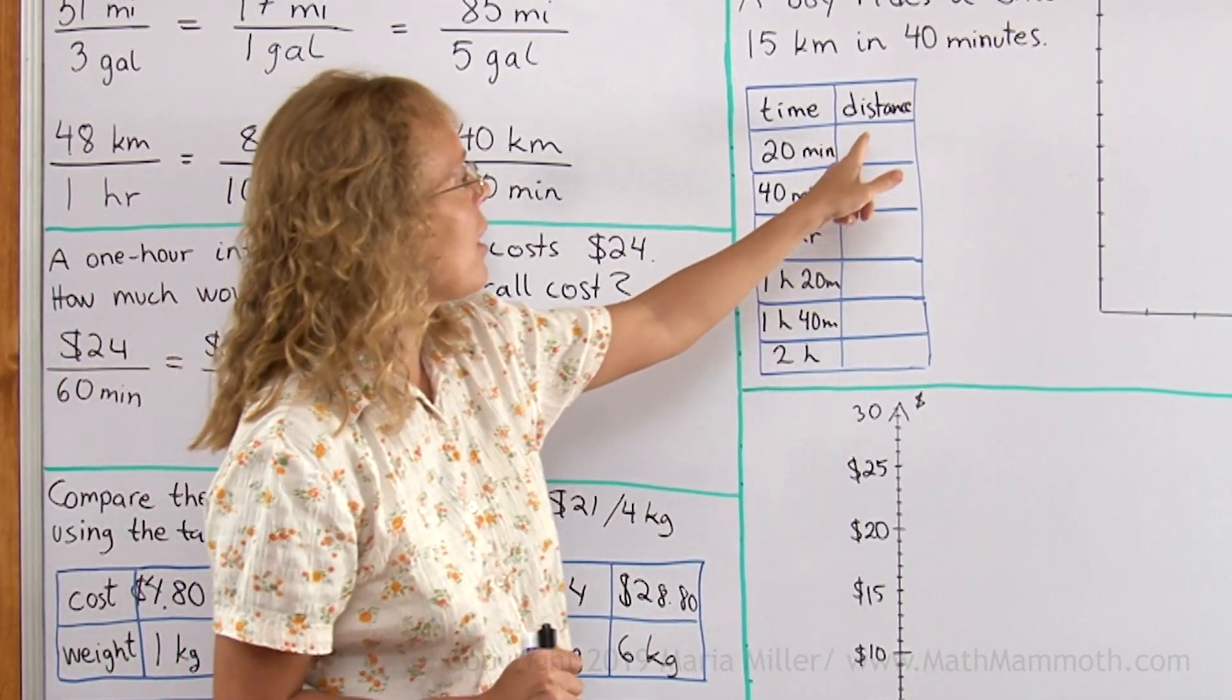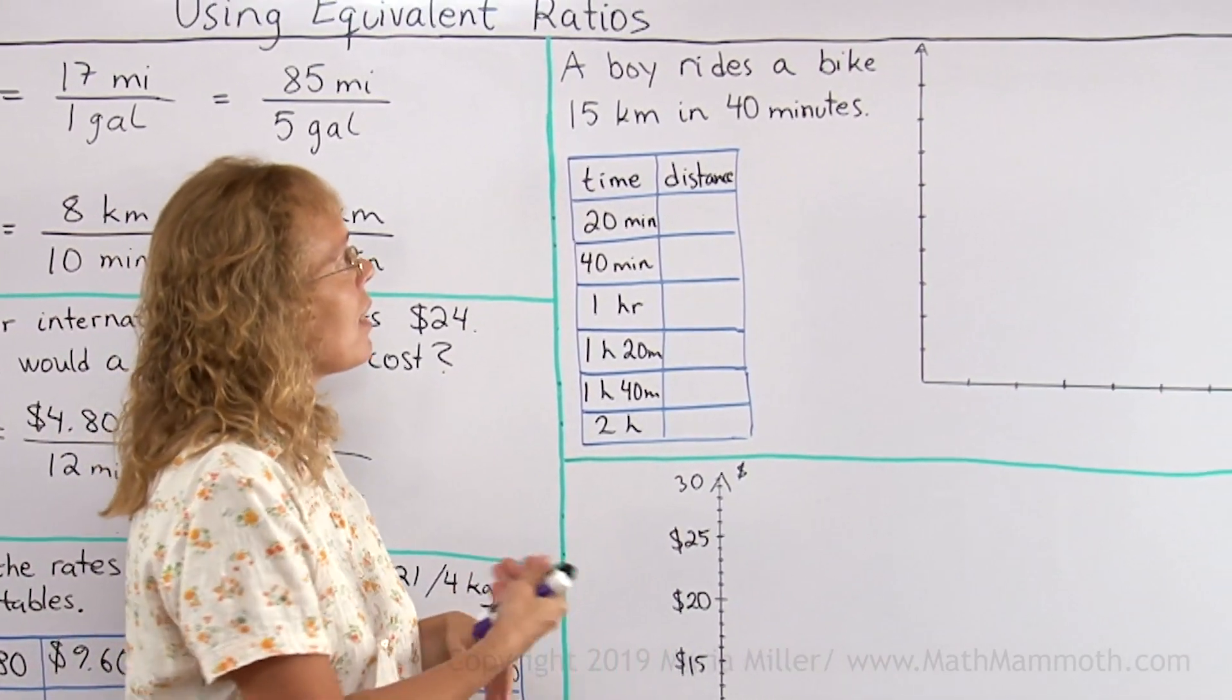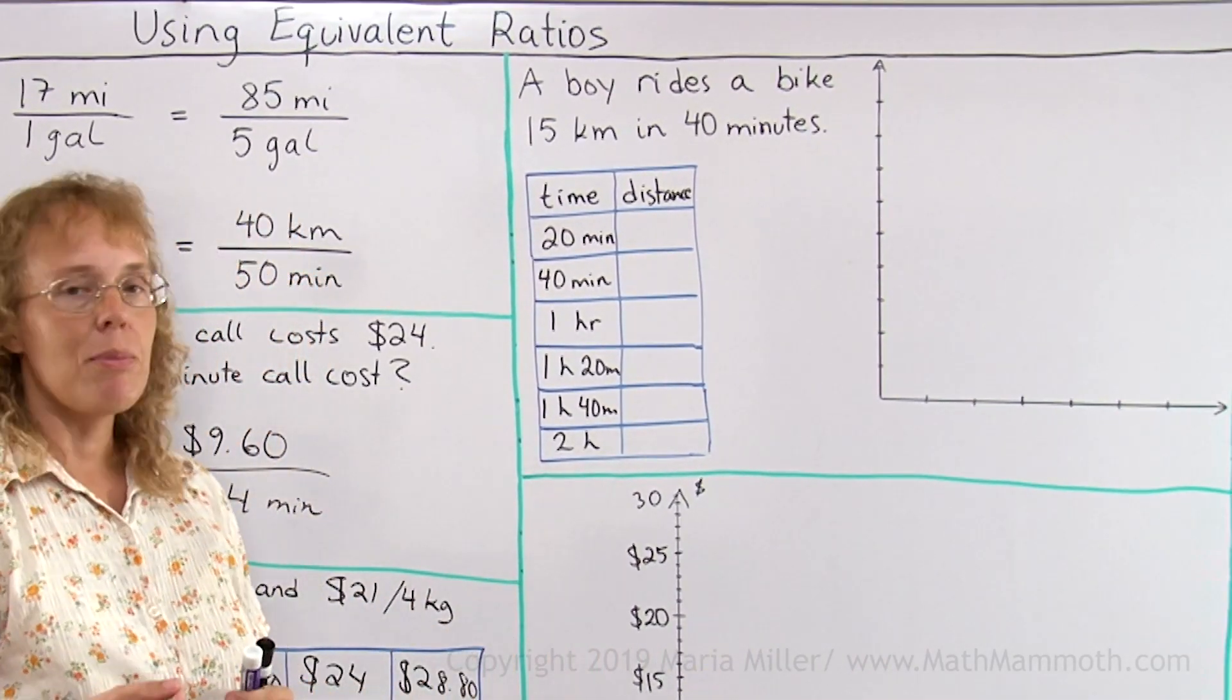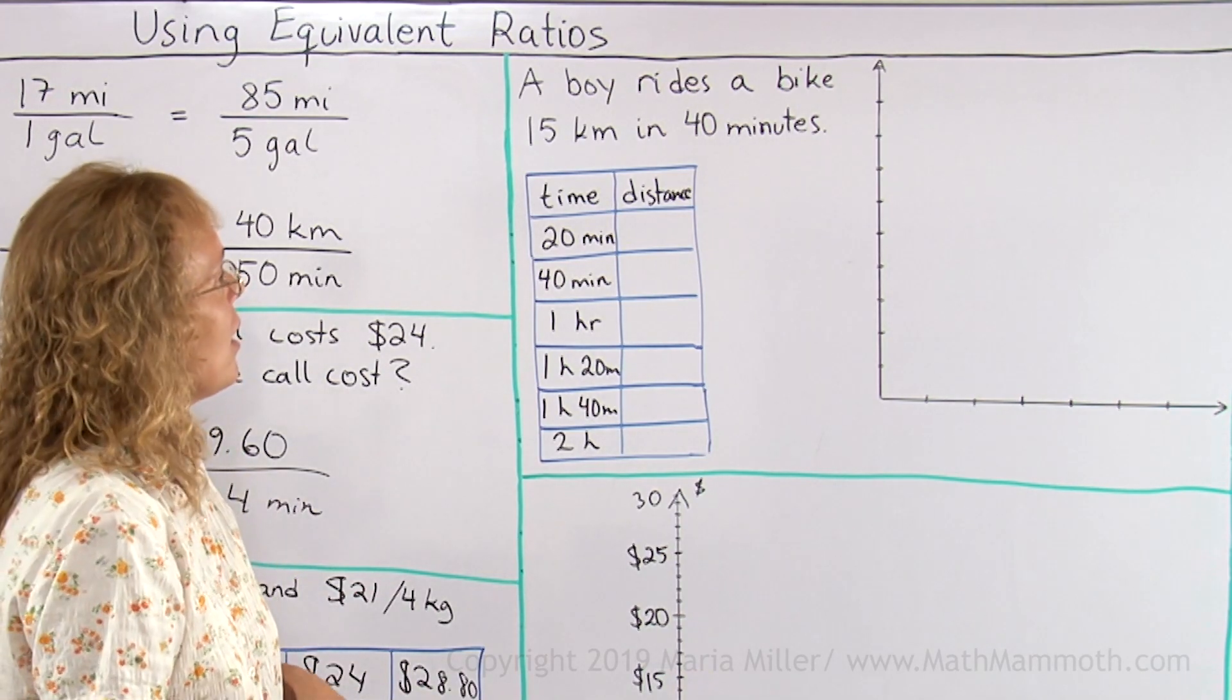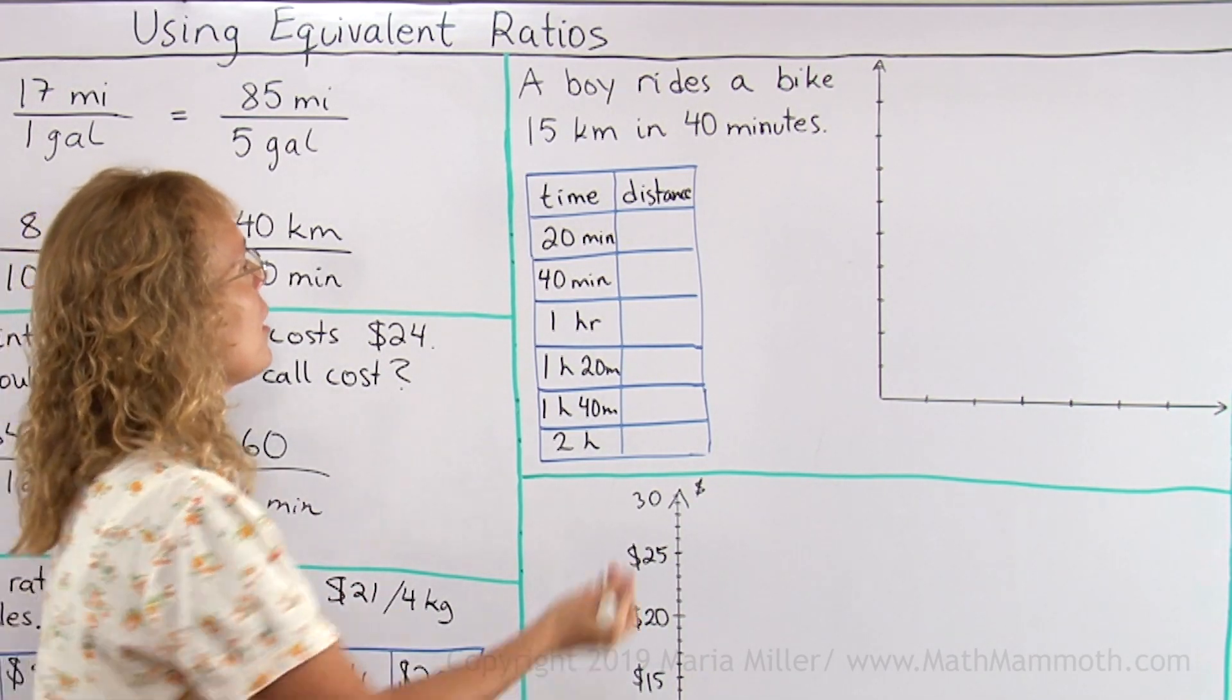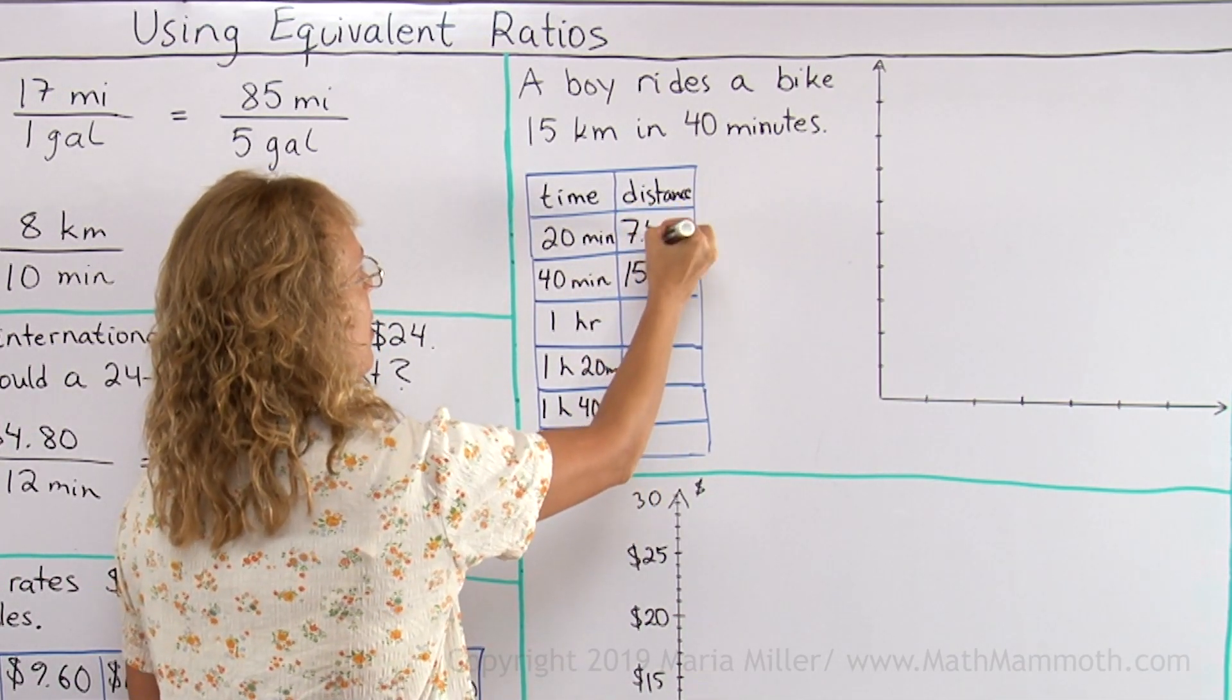Let's look at this one. Here's again the same kind of table. I just wrote it vertically instead of horizontally. A boy rides a bike 15 kilometers in 40 minutes with constant speed, we are assuming here now. And so, let's fill in this table. There would be 15 kilometers here. Half of that would be seven and a half.